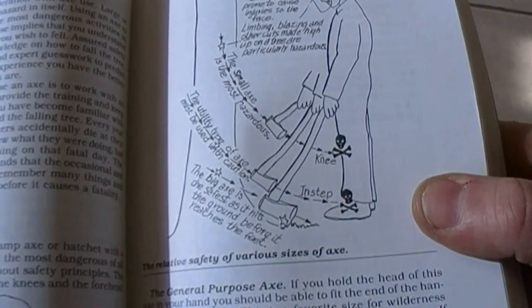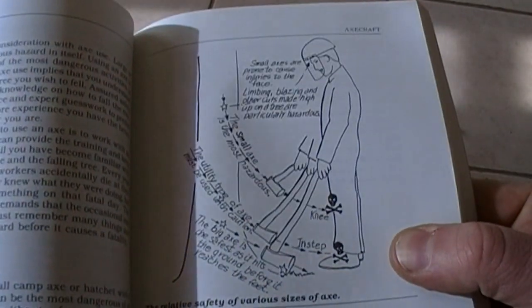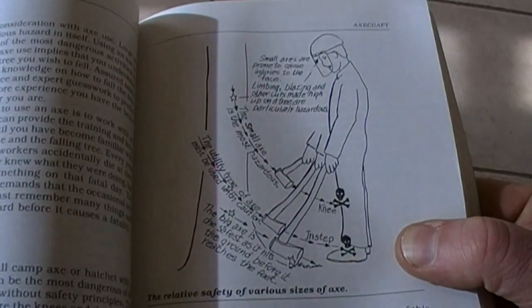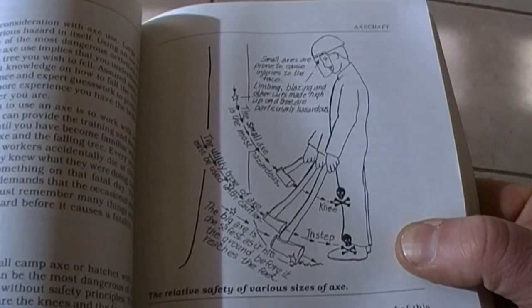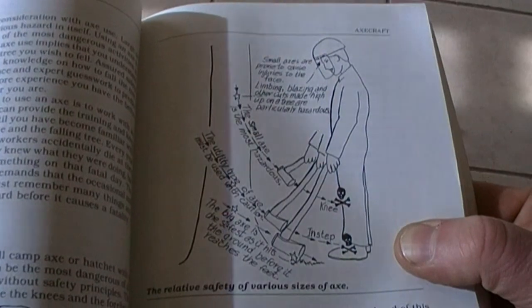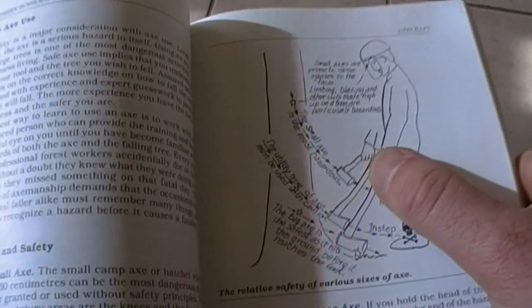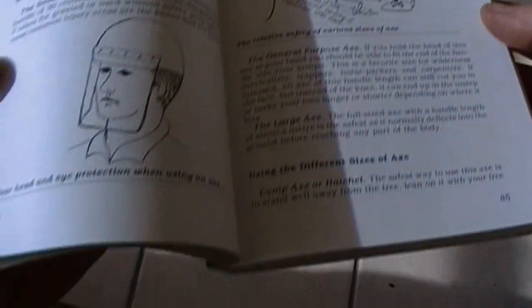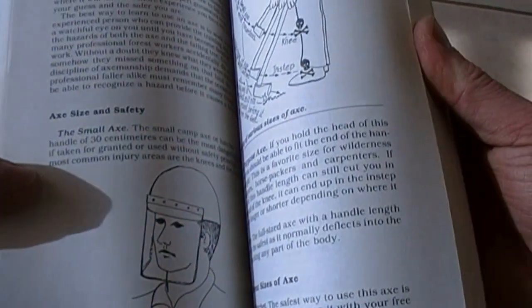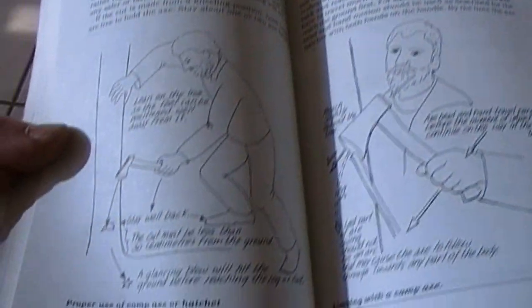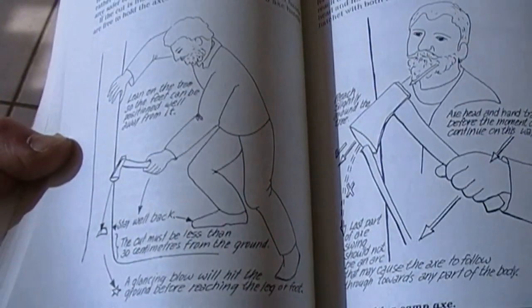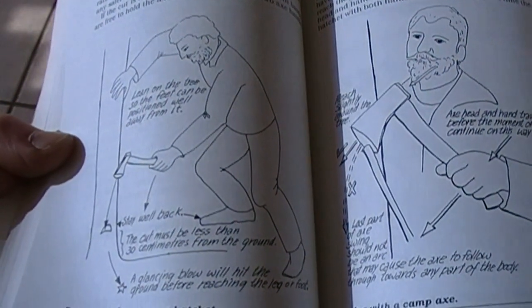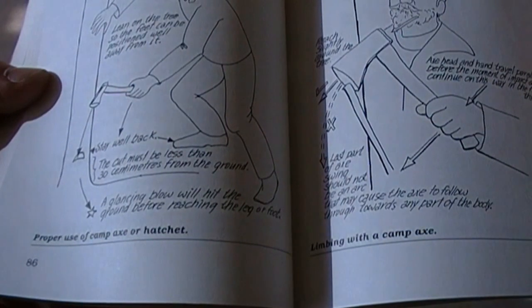Now, this is a diagram that I really appreciate because I hadn't understood just how dangerous a hatchet was until I saw this diagram here. So, you can see the shorter the implement, the greater the chance for injury. I learned a lot from this book. Now, here's his stance on when chopping down a tree. You can see how far he stands back.